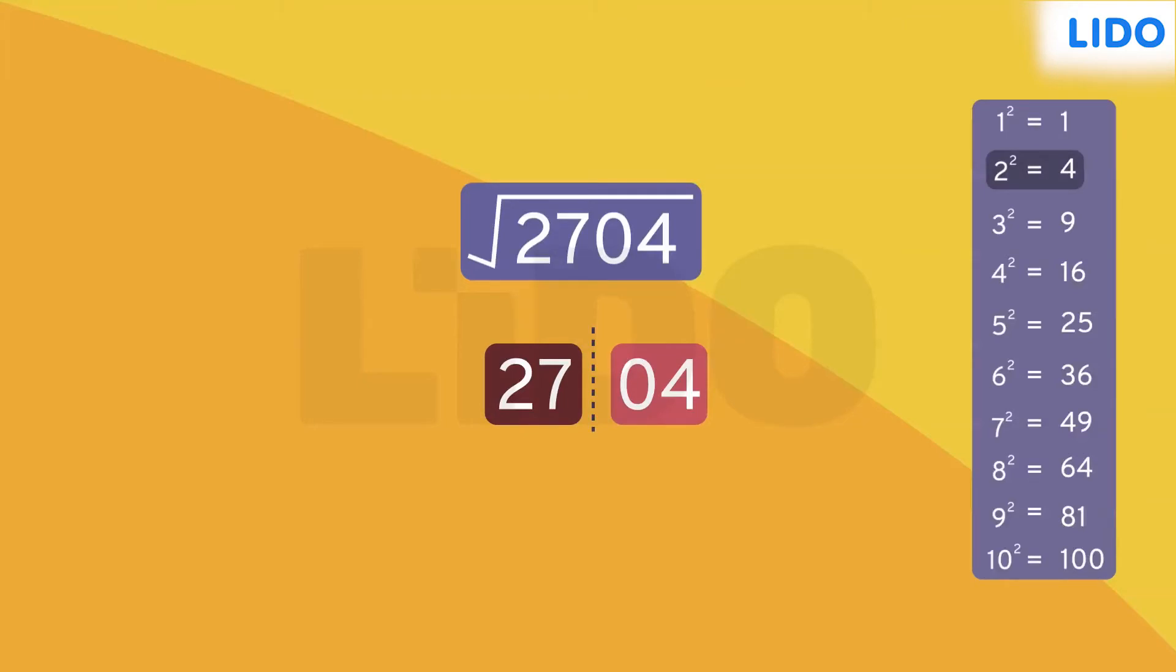Square of 2 is 4 and square of 8 is 64. Thus, the units place of the square root will be either 2 or 8.